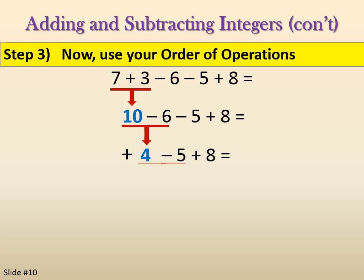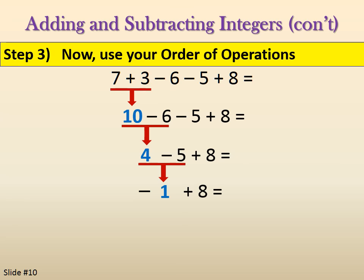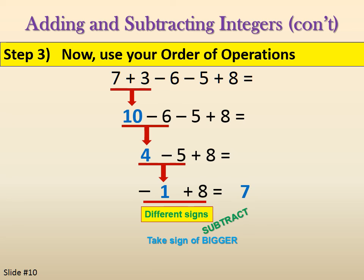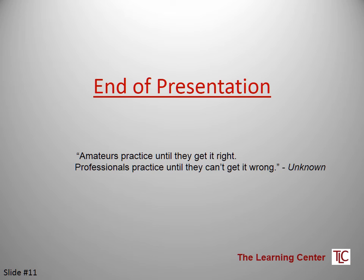Bring down the rest of the problem. Now we have positive 4 minus 5. The signs are different, so we subtract. 5 minus 4 gives us 1. Since 5 is bigger than 4, we grab its sign, so this is negative 1. Bring down the rest. Now we have negative 1 plus 8 — different signs — so we subtract: 8 minus 1 is 7. Since 8 is bigger than 1, we grab its sign, which is the plus. So the answer is just 7.